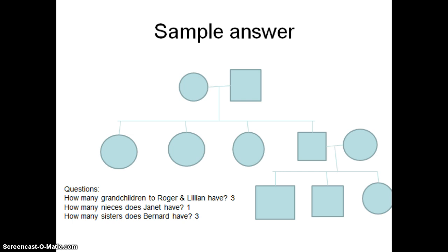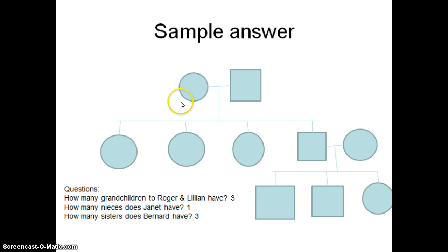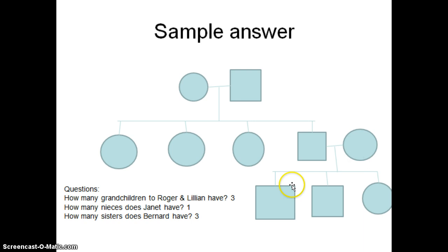The one thing I didn't draw that would be really important is labeling the generations. This would be generation number one — so Roman numeral one — with a one and a two under here. Then Roman numeral two, numbered one through four. Then down here Roman numeral three, numbered one, two, three, so that when you're talking you can refer back to the numbers.